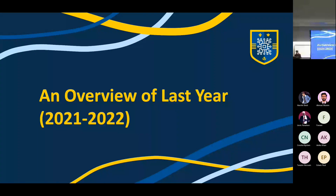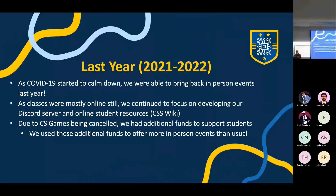Now for a quick overview of what we did last year. As we all know, COVID-19 started to calm down at the beginning of last year, so we were finally able to bring back in-person events, which was lovely. As our classes were mostly still online, we continued to focus on developing our online resources and workshops — things like our Discord server and our wiki. Due to CS Games being canceled again last year, we had additional funds to support extra events and care packages, which is why we ran on a surplus financially.